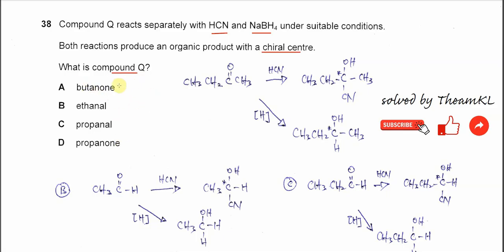For butanone, you need to know the structure. When butanone reacts with HCN, it will undergo addition, so the cyanide will add to this carbon and the oxygen will get the hydrogen, forming this cyanohydrin.